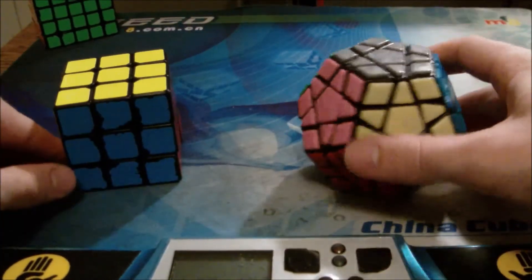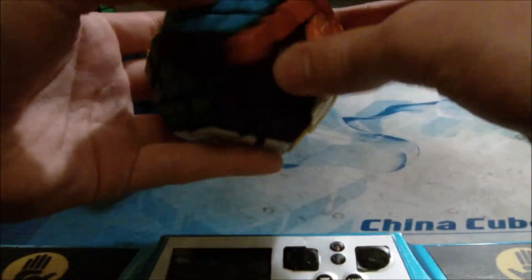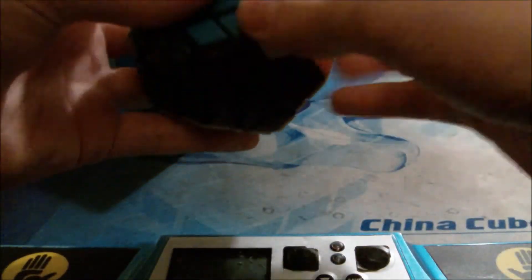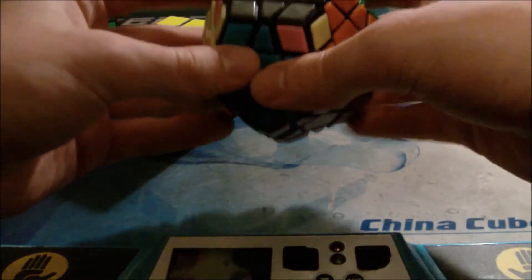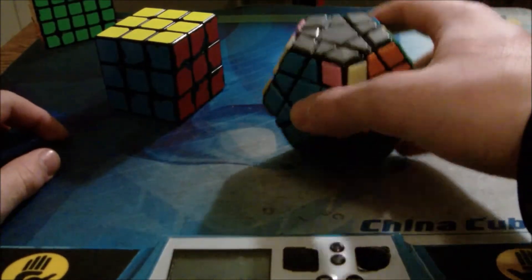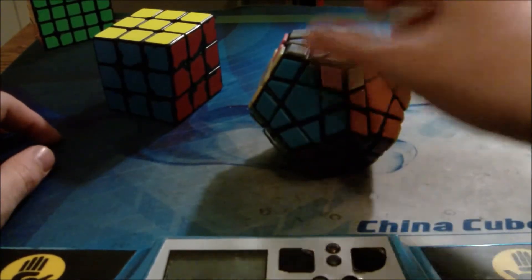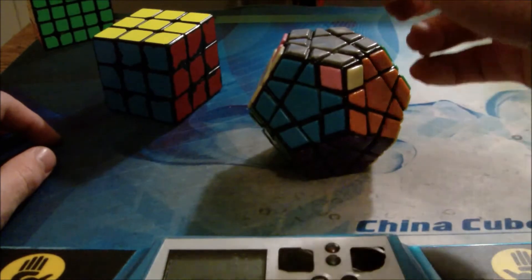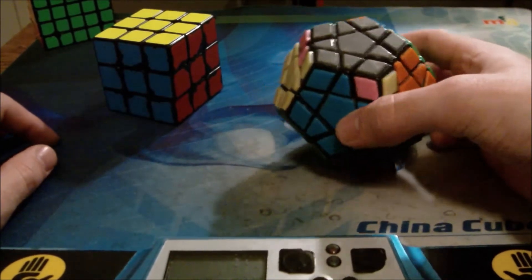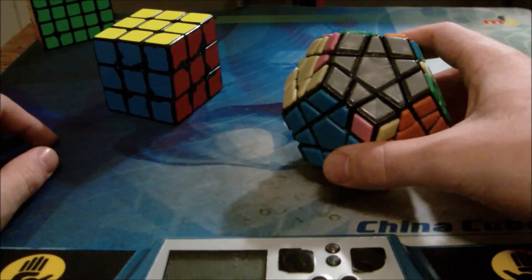But there's another Y-perm. They are, I guess you'd call them inverses of each other. Well, they are mirrors, but when you do one, you get the other. So, this one is the mirror, the anti-Y-perm.